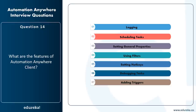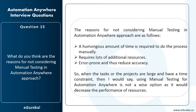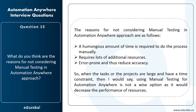What are the reasons for not considering manual testing in the Automation Anywhere approach? A huge amount of time is required to do processes manually, it requires many additional processes, and the processes can be error-prone, reducing accuracy. Whenever tasks or projects are large and have time constraints, using manual testing is not a wise option as it decreases the performance of resources and reduces accuracy. This concludes the basic interview questions section.